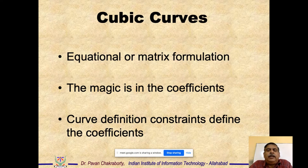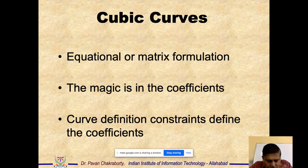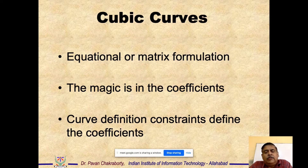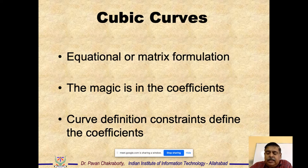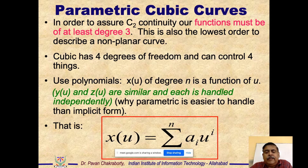The magic is in the coefficients — the curve definition constraints define the coefficients. The constraints are: the two endpoint coordinates must be on the curve, and the first derivative must be continuous at those endpoints. If we apply these constraints we can separate the coefficient vector C into a spline matrix M_spline multiplied by a geometry vector M_geometry, allowing the spline matrix to remain the same regardless of the points or derivatives chosen.